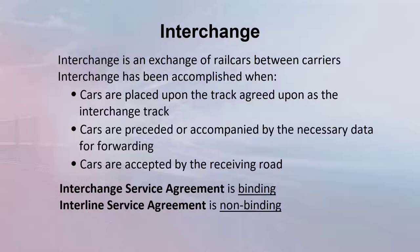Third, cars are accepted by the receiving carrier. Many carriers now use interline service agreements (ISAs) or interchange service agreements to formalize interchange procedures. The interchange service agreement is a binding agreement between two railroads for interchange, which spells out time and place of interchange. There is generally a variance that is allowed. The interline service agreement is like the interchange service agreement, but this agreement is non-binding.